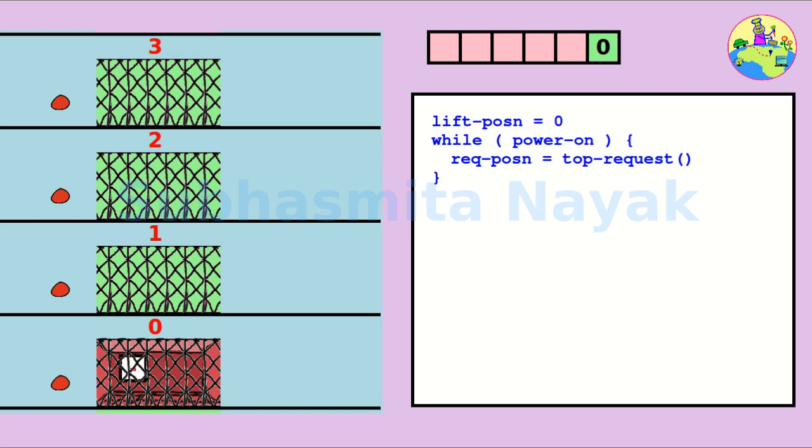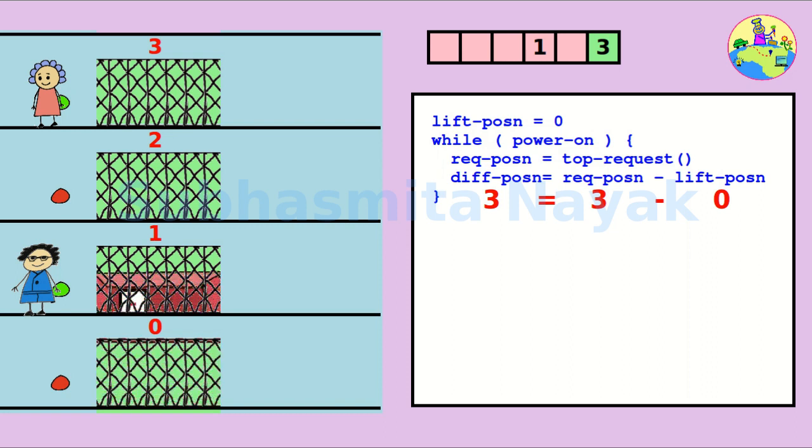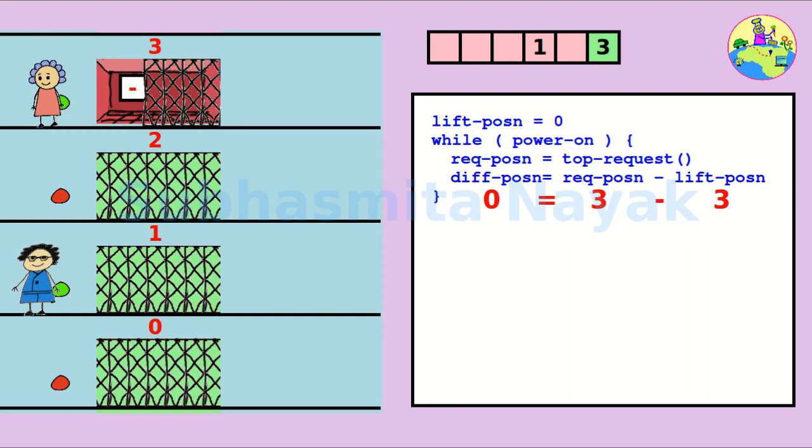Once it gets a new request, it checks the difference between its current position and requested position. Accordingly, it decides whether to go up or down. If the requested floor number is more than the lift position, the difference is more than 0.